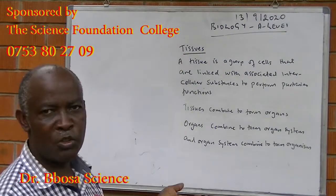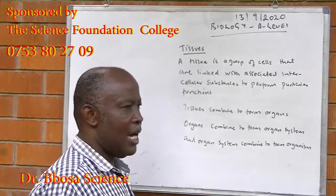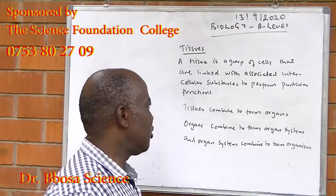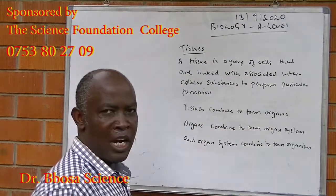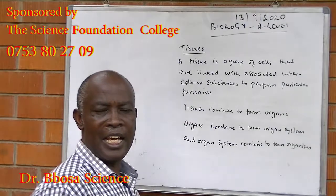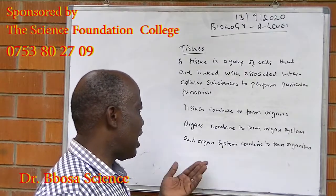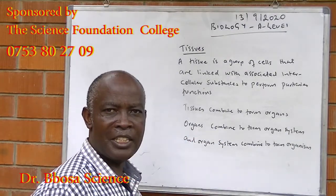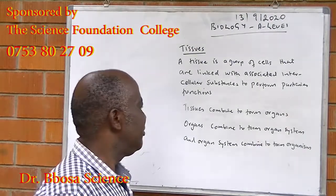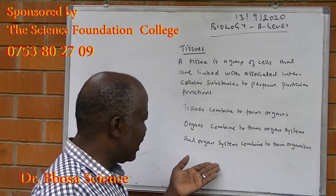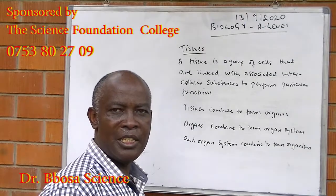Examples of tissues include muscles, blood, bone, and connective tissues. Tissues combine to form organs like kidney, heart, and brain. Organs combine to form organ systems, like the nervous system, circulatory system, and respiratory system. Then the systems combine to form an organism — an example of an organism is man.